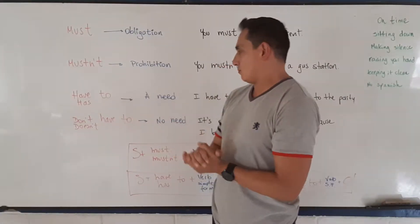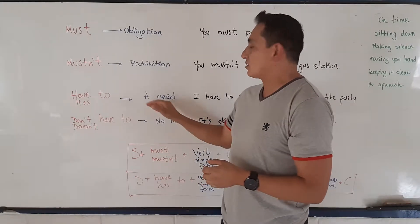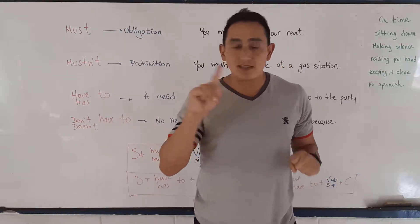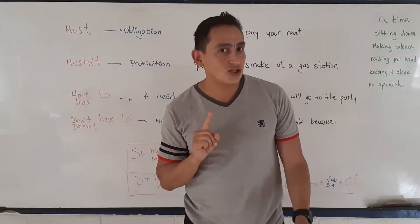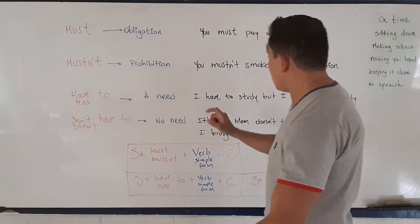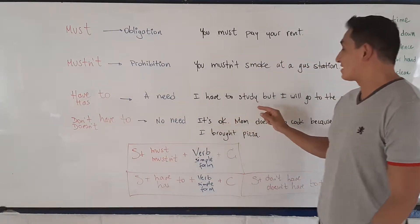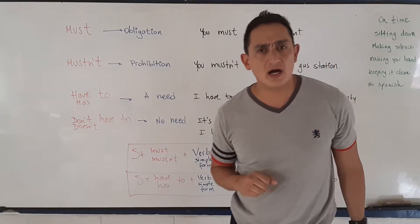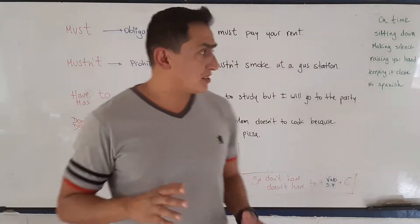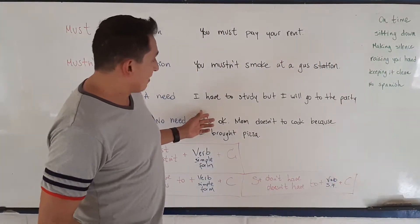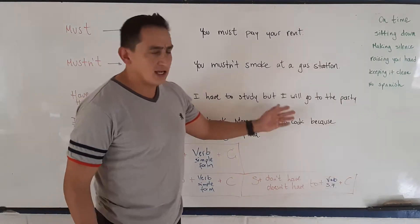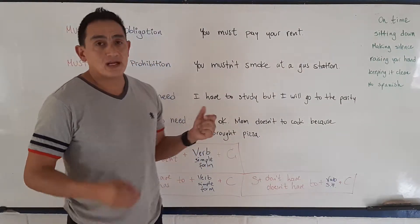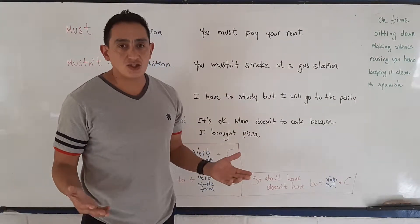And now we're about have to. Have to is when you have a need, but it is not an obligation. For example, I have to study, but I will go to the party. I have to study, but I will go to the party. I have a need, but it's not an obligation.